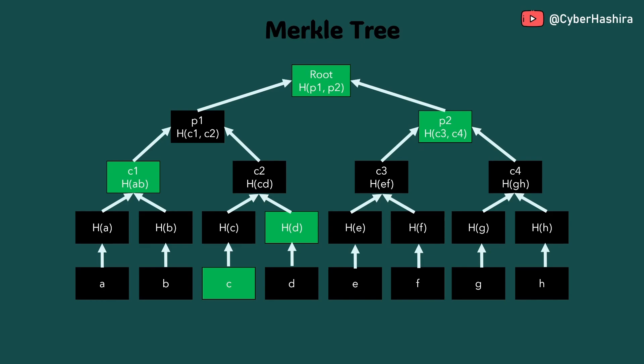To prove the integrity of a message in a Merkle tree, all that is required is the hash value of the other pair node. For example, if I want to prove the integrity of message C, I only need to provide the hash value of the leaf node denoted by H(D), the hash of C1, and the hash value of P2. Recomputing all the hashes should result in a matching root value, provided the message has not been tampered with. And this is the same principle used in the Merkle signature scheme.